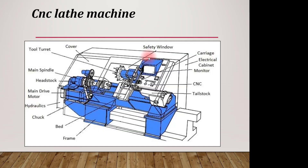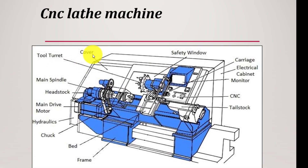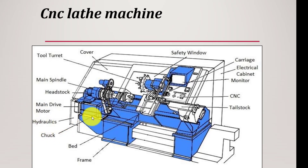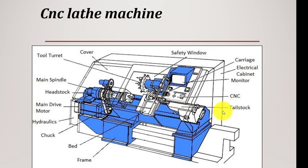Here you can see the CNC lathe machine and its basic parts: tool turret, main spindle, headstock, motor drive, hydraulics, chuck, electrical cabinet, monitor, CNC controlling panel, and tailstock. So these are the basic parts of the CNC machine.